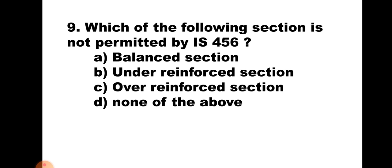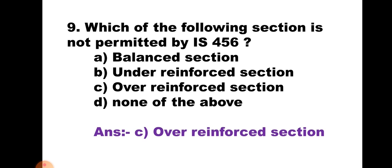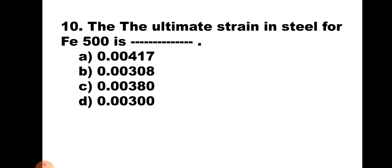Question number 9: Which of the following sections is not permitted by IS 456? A. Balanced section, B. Under-reinforced section, C. Over-reinforced section, D. None of the above. As the collapse of an over-reinforced section is sudden and without giving any early intimation, IS 456 does not permit such type of section. Hence, the correct answer is C. Over-reinforced sections.